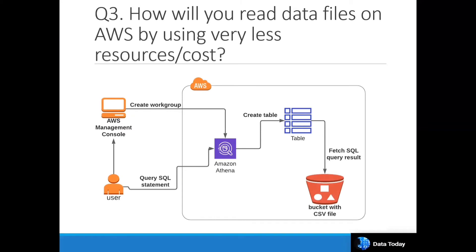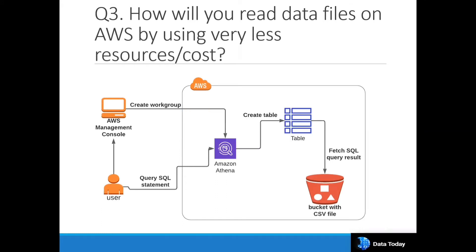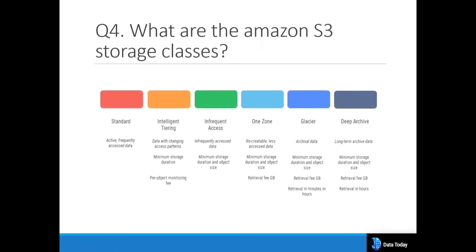The next question is: how do you read data files on AWS with a cost-effective solution? The answer is Athena. Athena is an interactive query service where you write SQL queries against data stored in S3. Using the AWS Management Console, you can create workflows and write SQL query statements. For example, you can query a CSV file stored in an S3 bucket, and Athena will pull and display the data in its worksheet, which you can also download for analysis.